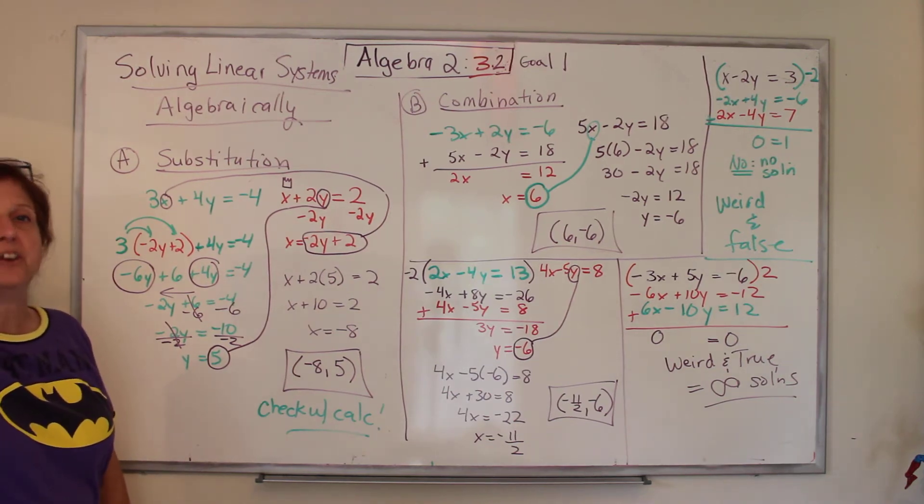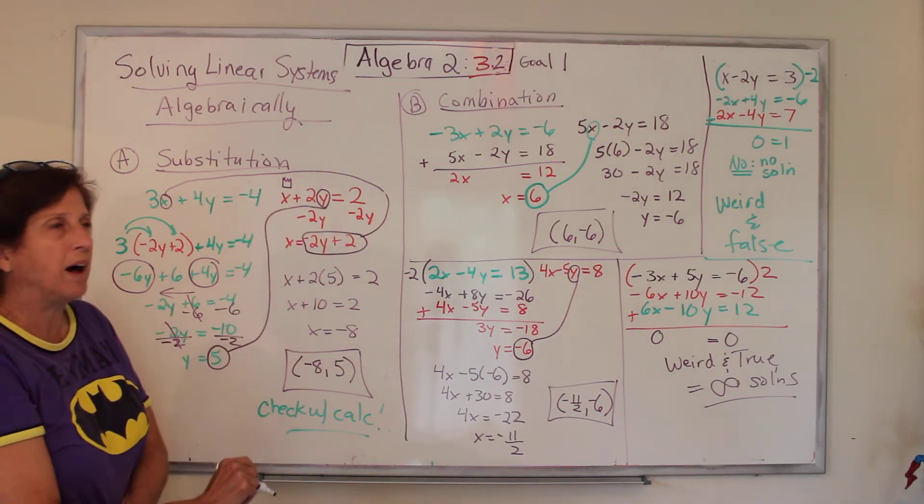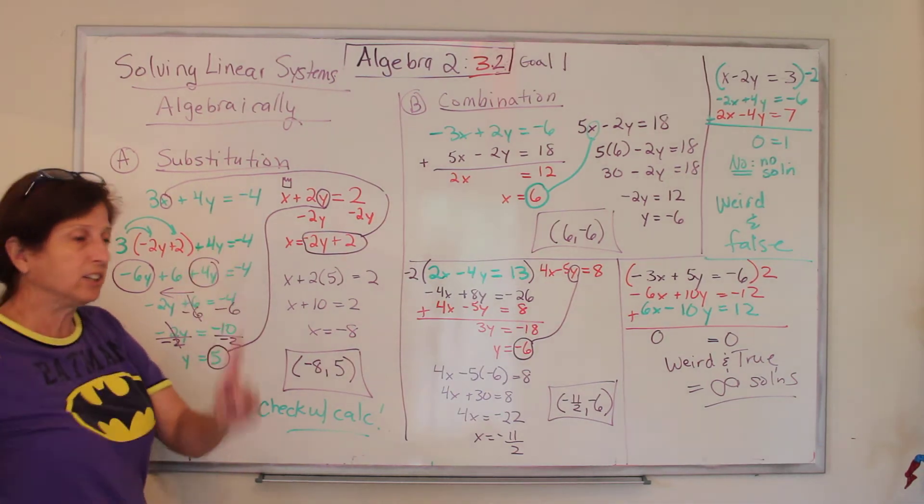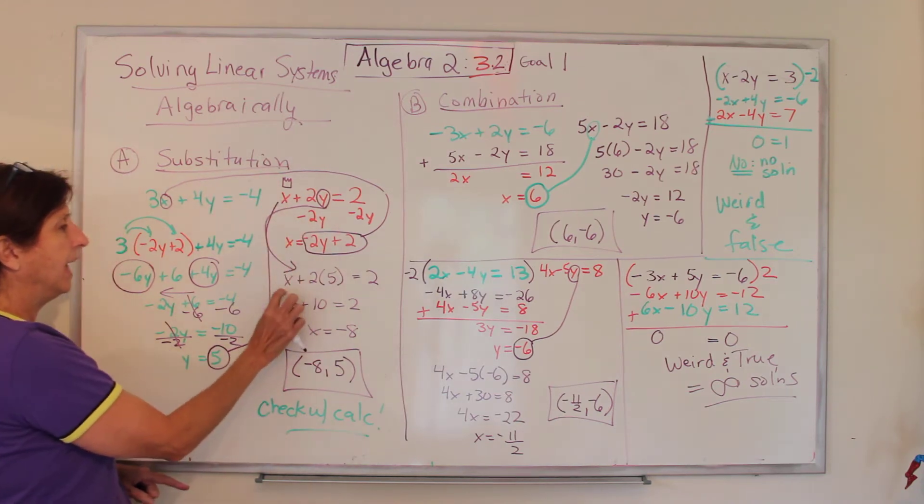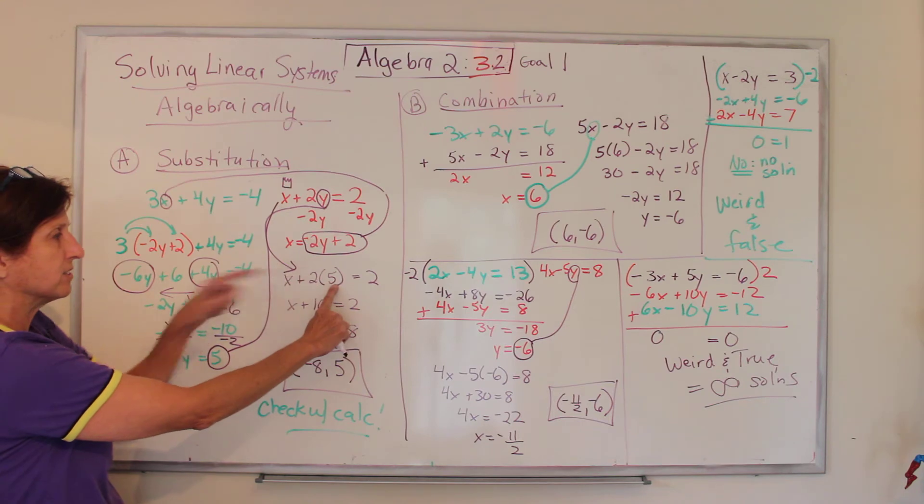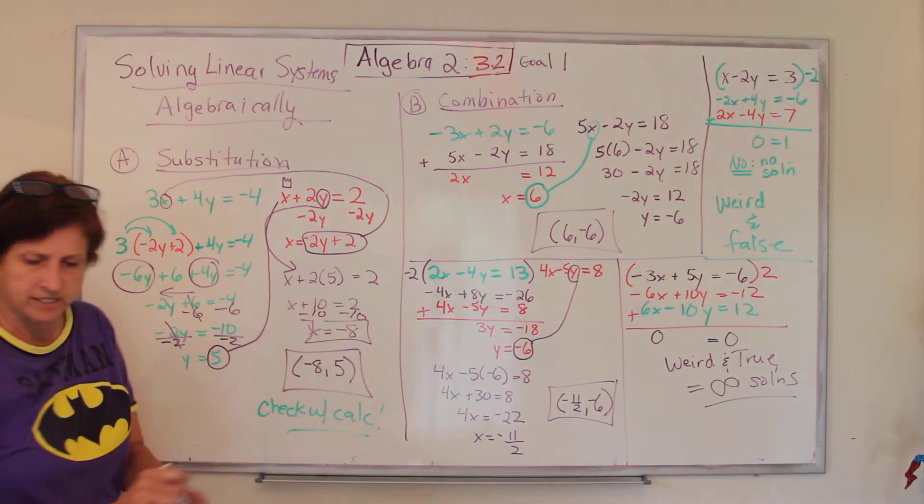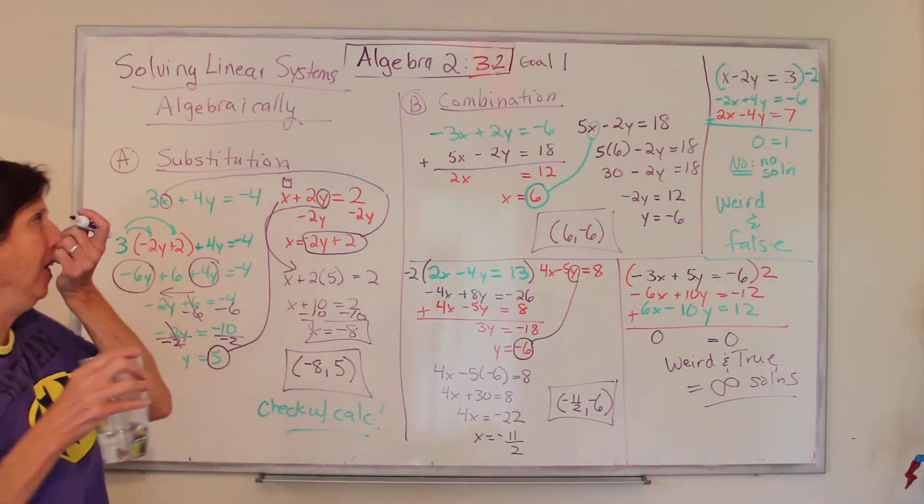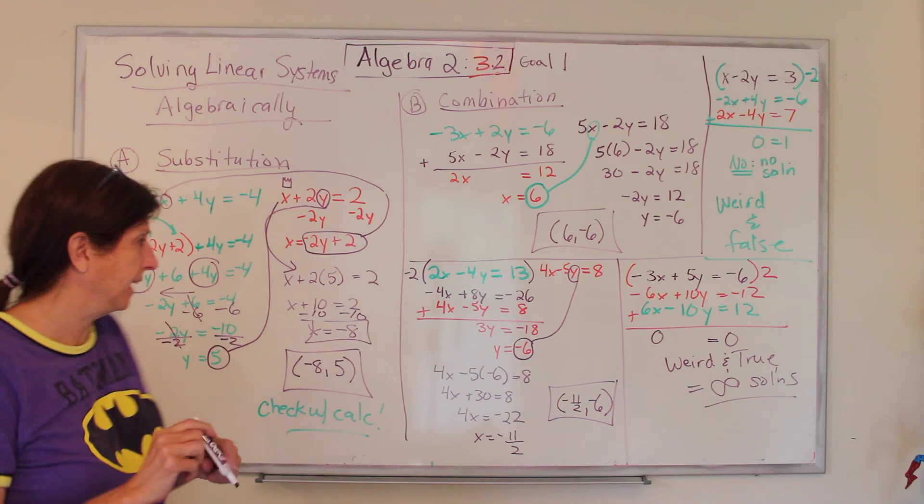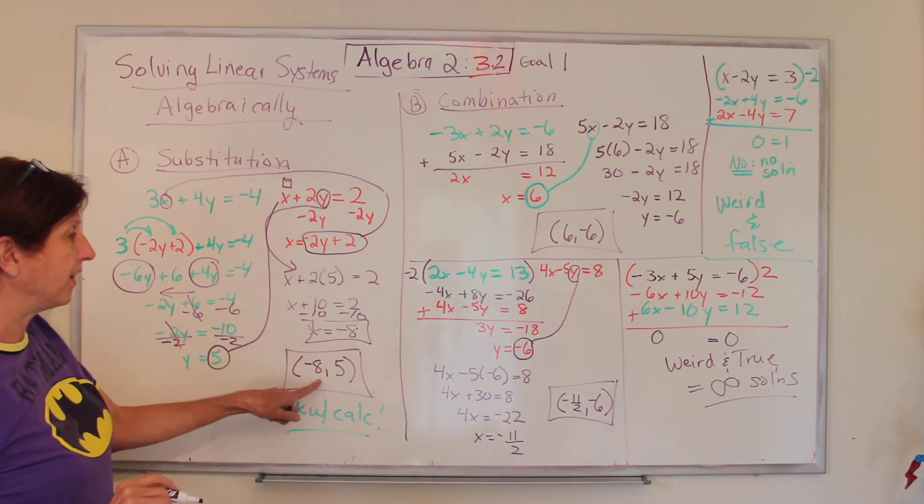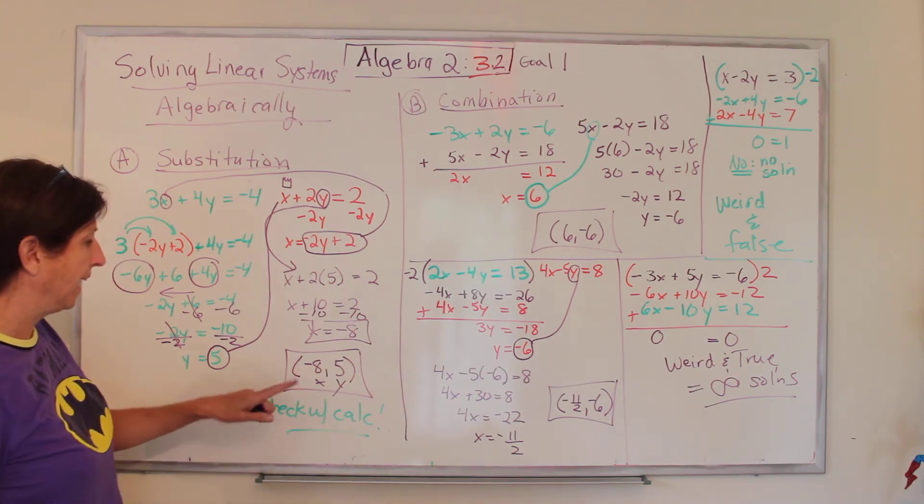Are we to the answer yet? No. So now we circle this 5, and we draw a line back to the first equation and circle the Y. And what are we going to do? Substitute 5 in for that Y. And I did it right down here. X plus 2 times 5. See, there's the 5 equals 2. 2 times 5 is 10. Minus 10 from both sides. X equals negative 8. This is my 10th video to make today. Or 11th. So now that I have the answer. This is my X. This is my Y. Be sure to put them in the right alphabetical order. And that is the answer.